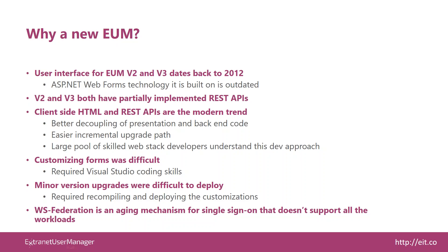The application wasn't built to scale from a UX point of view to that level. We wanted to make sure we can support well into the hundreds of thousands of external users, respond quickly, and work well from a user experience point of view. Using client-side HTML and REST APIs is the modern development trend. It works well for decoupling presentation from back-end code, makes upgrades easier, and introduces a much broader pool of developers. If you understand web stack — HTML, JavaScript, jQuery — you know how to develop with Extranet User Manager. Minor version upgrades were difficult before because customizations were compiled and baked into that particular version of UM, creating a barrier to upgrade.